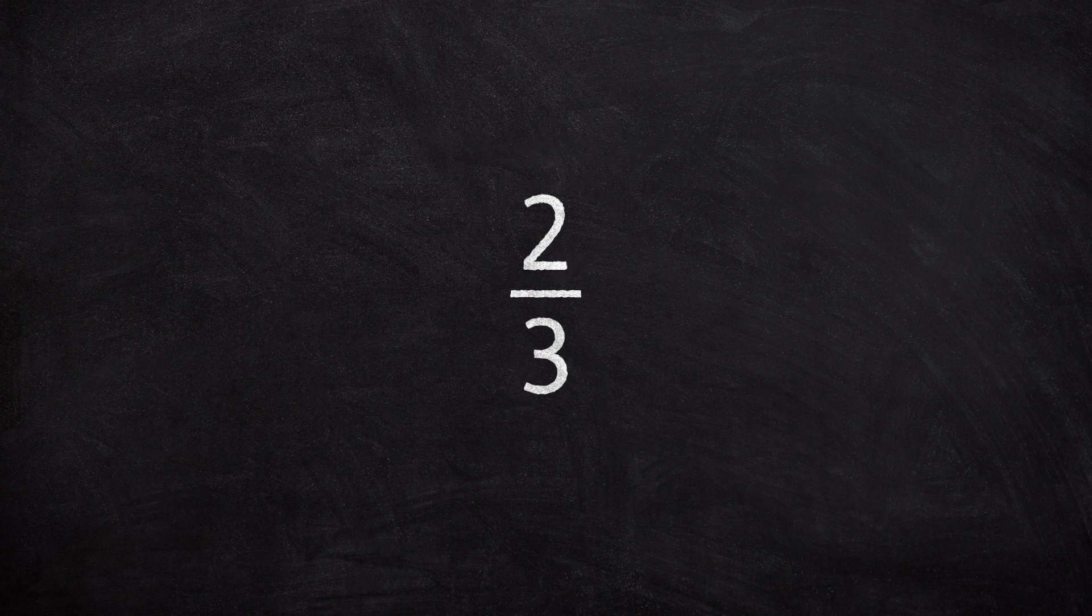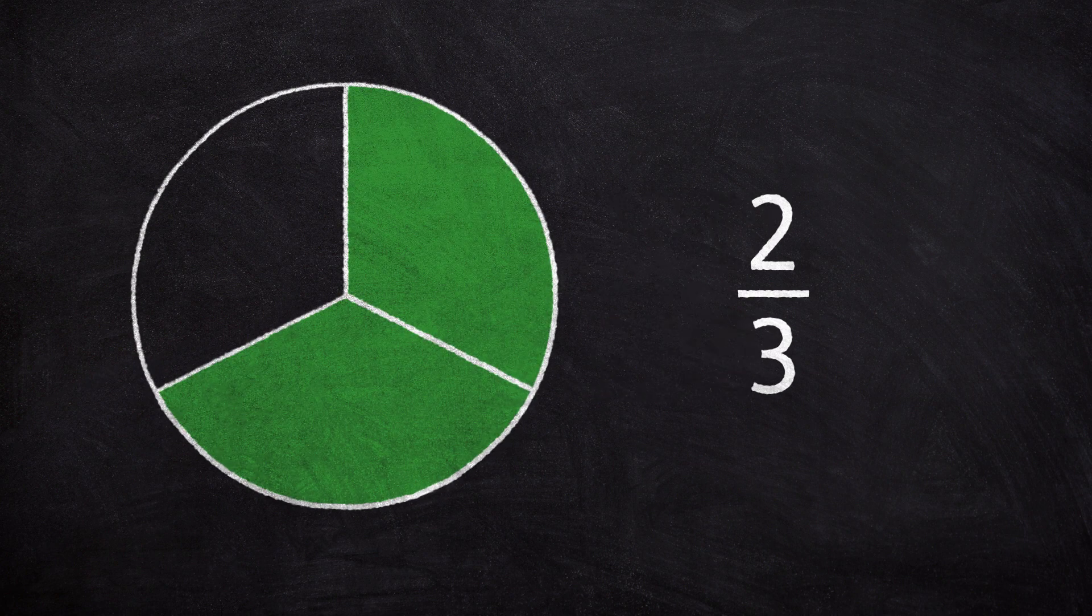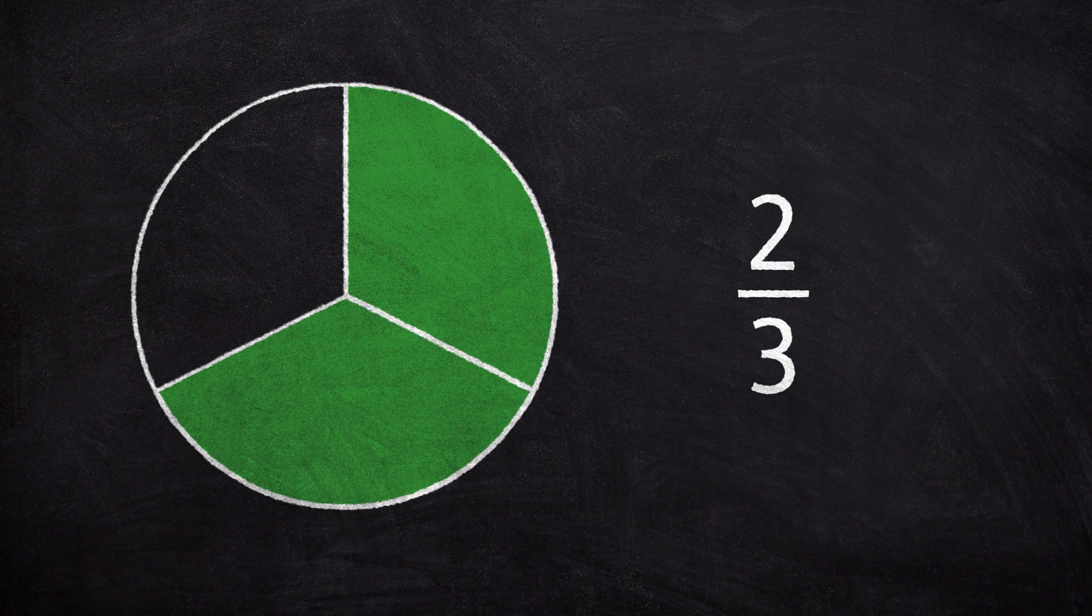Here the denominator is 3 and the numerator is 2, telling us that we have two equal parts of a shape or quantity that has been divided into 3.